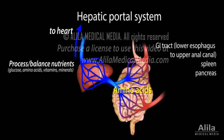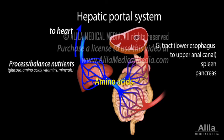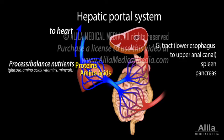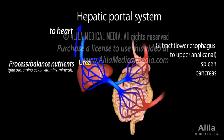The free amino acids resulting from protein digestion are also processed in the liver, where they are synthesized into new proteins and pro-enzymes. Excess free amino acids, which can be harmful, are converted to other forms of energy storage, or broken down to urea to be removed in waste.